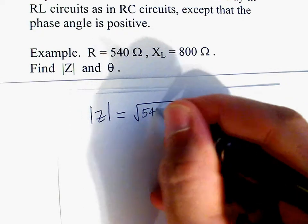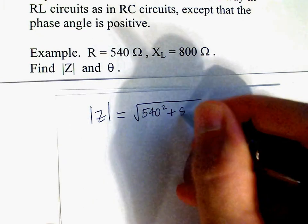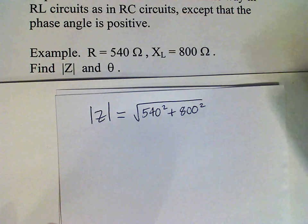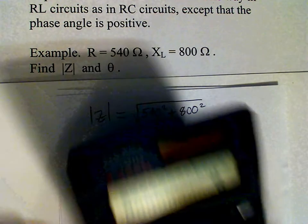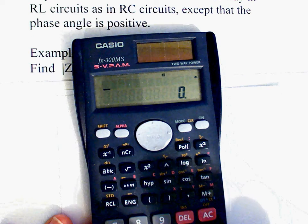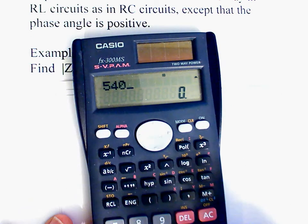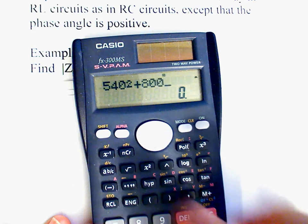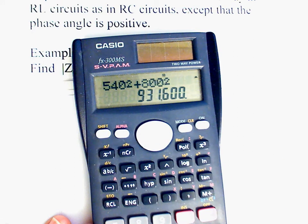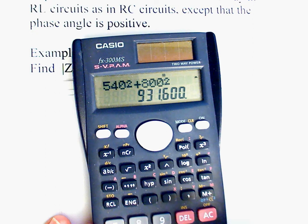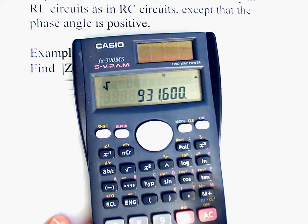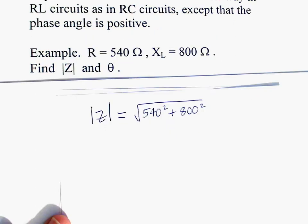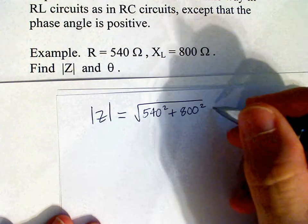Okay, so Z we get by square root sum of the squares. So we have 540 squared plus 800 squared. So we have that large number and take the square root, and we get the answer 965 ohms approximately.